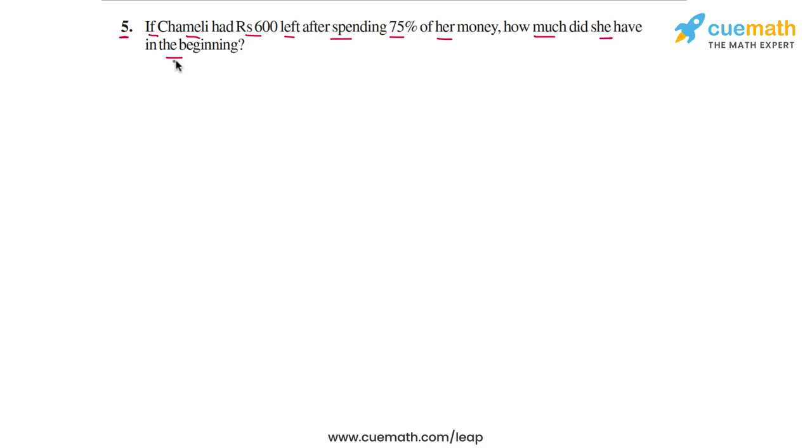Chamelee had some money in the beginning, she spent 75% of that money and she was left with Rs. 600. We have to find out how much money she had in the beginning.